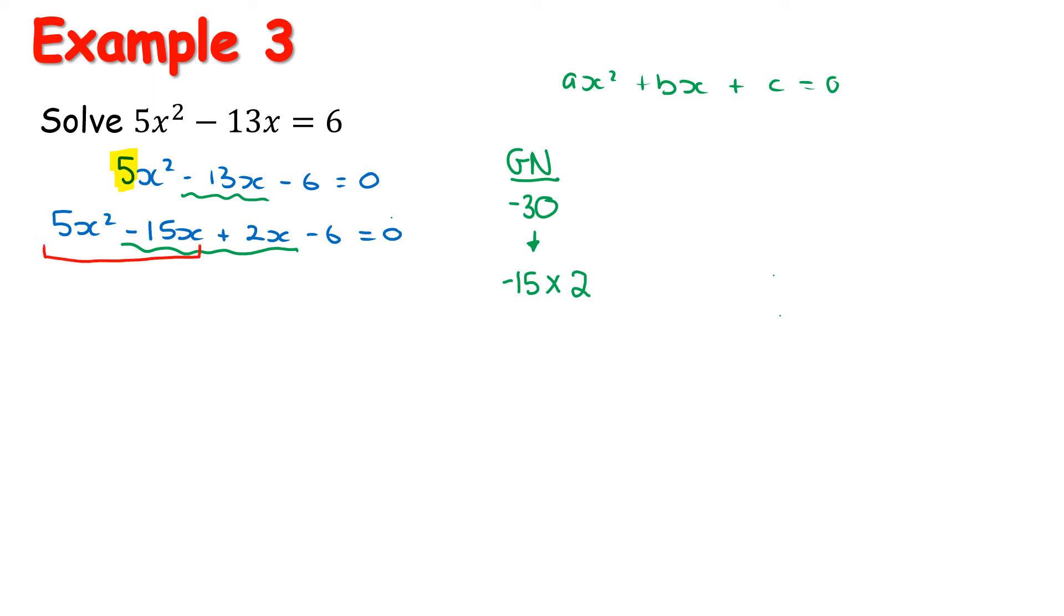We're going to break it into then our two groups. 5x is common in the first group, leaving us with x - 3 in the bracket. Plus, that sign always follows. 2 is common, leaving us with x - 3. That all equals 0. The x - 3 is common, so that's pulled out to the front, times 5x + 2, and that all equals 0.